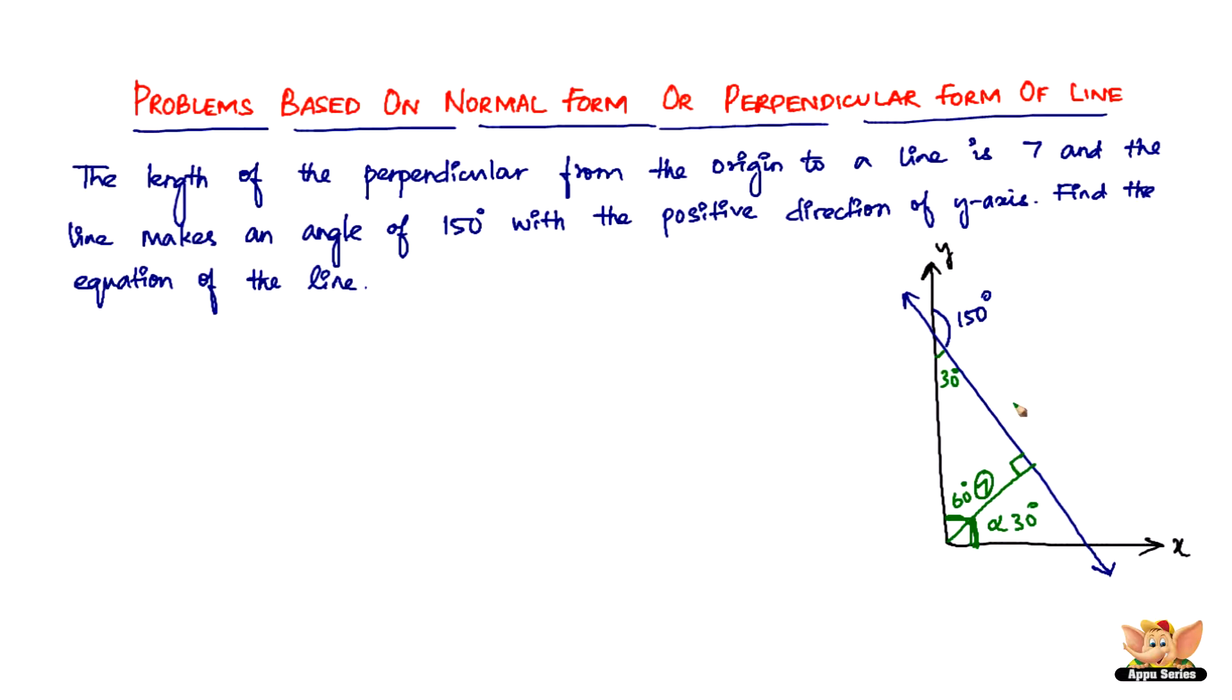So we have the alpha and we have the length of the perpendicular, and so the problem is 99 percent done because we just have to substitute the values of alpha and P in this equation, which is X cosine of alpha plus Y sine of alpha equals P.